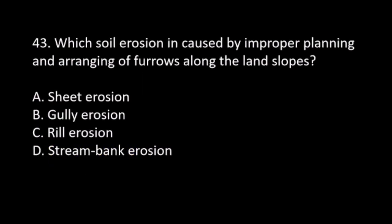Number 43. Which soil erosion is caused by improper planting and arranging of furrows along the land slopes? A. Sheet erosion. B. Gully erosion. C. Rill erosion. D. Streambank erosion. The answer is C. Rill erosion.